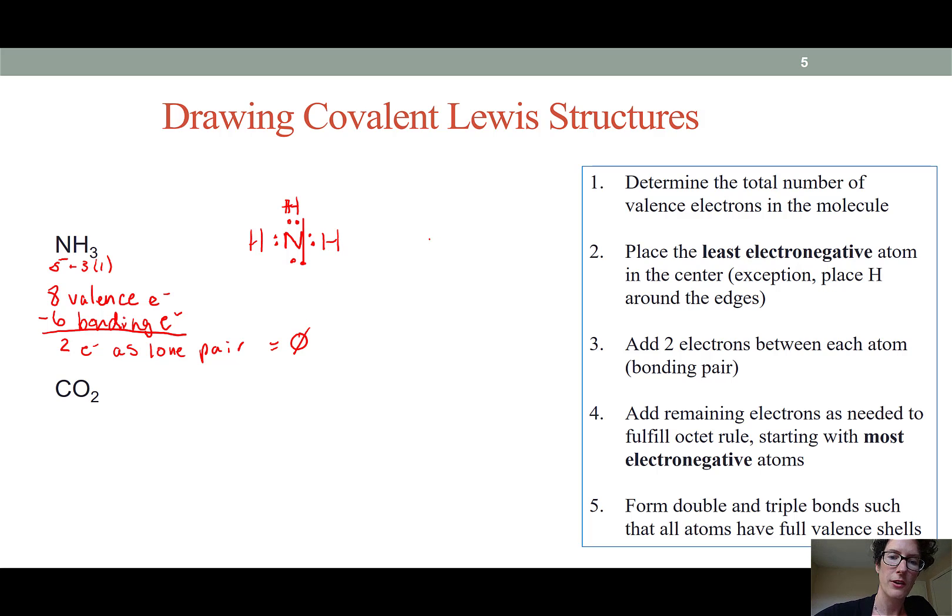Now when I've added those I'm down to zero remaining electrons and I have my final structure. I can simplify my structure by replacing the bonding electrons with lines. What we end up with is a molecule of NH3 which is known as ammonia.